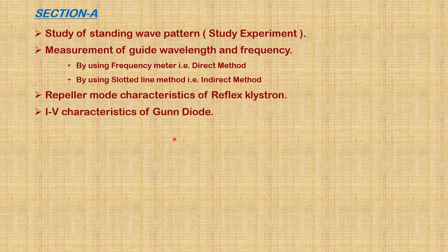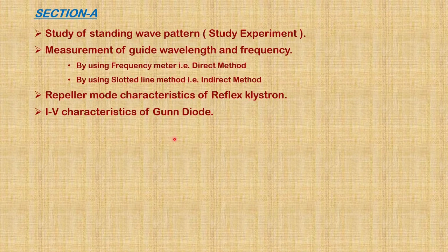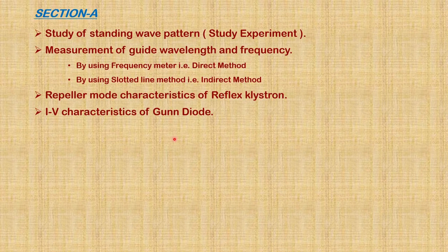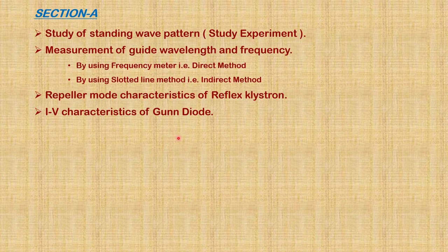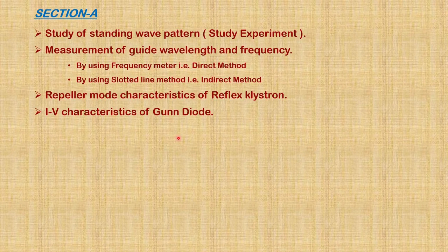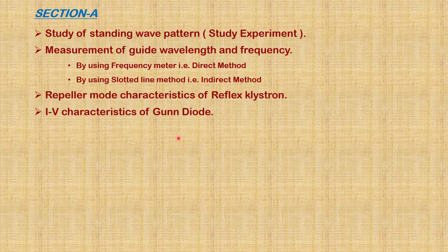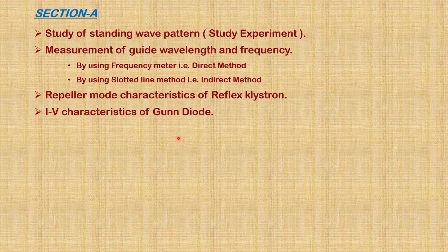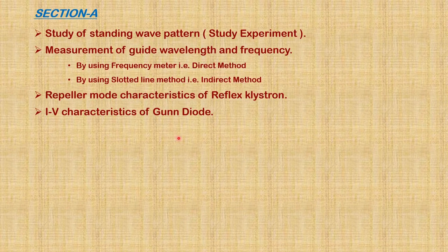Next experiment is I-V characteristics of Gunn diode. In this experiment, by varying bias voltage, we are going to find out the relationship between current and voltage. Here we can observe peak and valley values in the negative resistance region.